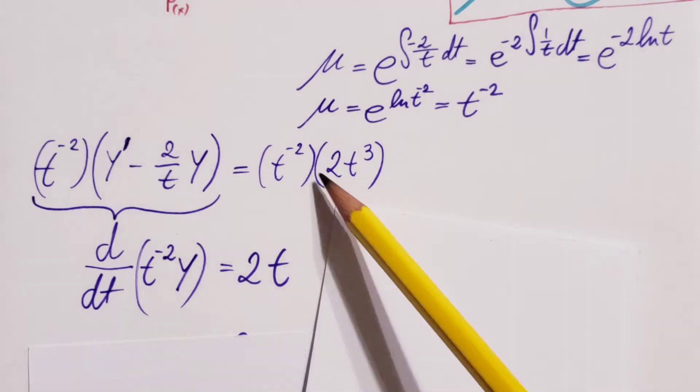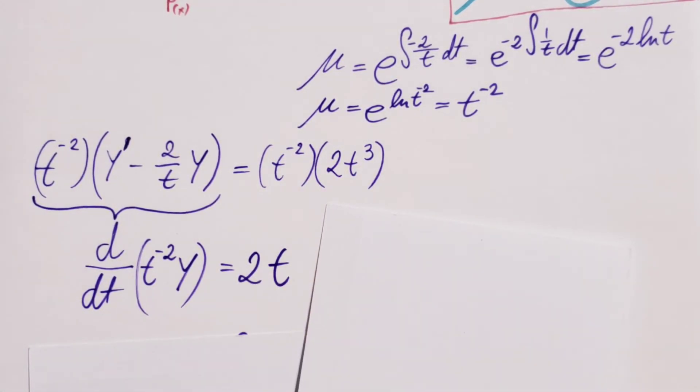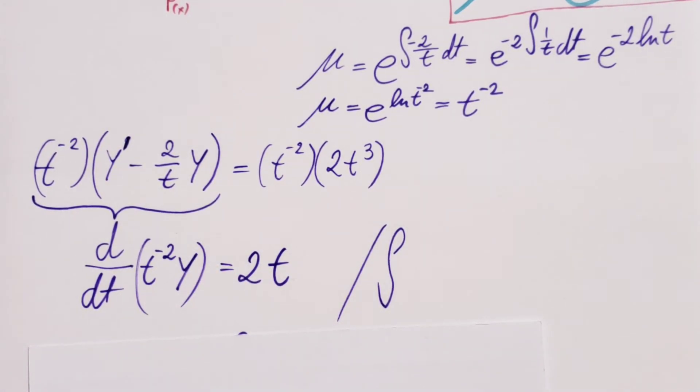On the right-hand side, simply simplify. It becomes 2t. Now, this was beneficial because now we can simply take an integral of both sides and we will be able to get our y. That's what we're going for.